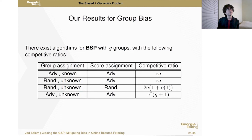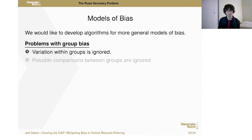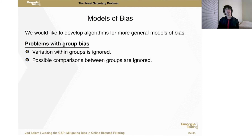Now I'd like to shift gears and talk about other models of bias. There are some natural complaints about the group model of bias. For example, it completely ignores any variation within groups — it assumes all applicants in the same group experience the same amount of bias, which is simply not true in practice. Another issue is that it completely ignores possible comparisons between groups, which is also unrealistic. Typically we will be able to make some comparisons between applicants in different groups.